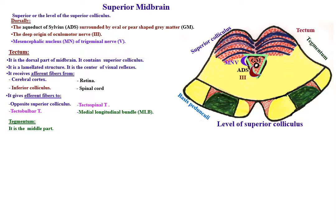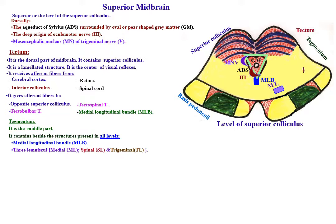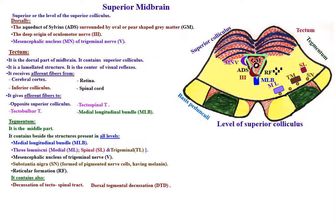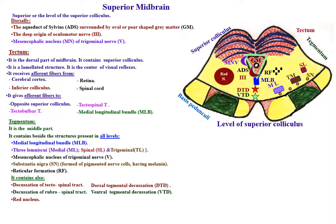The tegmentum, which is the middle part of the midbrain, contains beside the structures mentioned in all levels: decussation of the tectospinal tract (dorsal tegmental decussation), decussation of the rubrospinal tract (ventral tegmental decussation), and laterally the red nucleus.